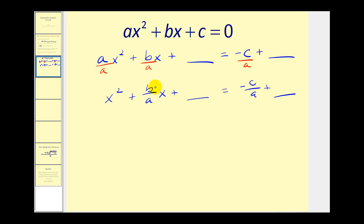Now we have to take half of the coefficient of the X term and square it. Let's show that work. We're going to take half of B over A and then square this. This gives us B over 2A squared, which is B squared over 4A squared. This is what we're going to add to both sides of the equation.